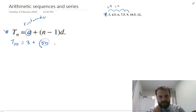So 50 minus 1 times d, which is the common difference. The common difference here is 1.5.